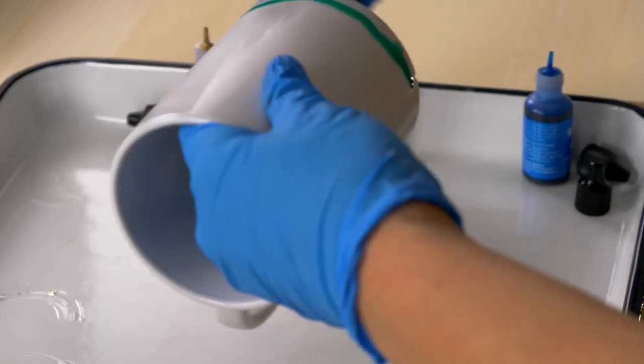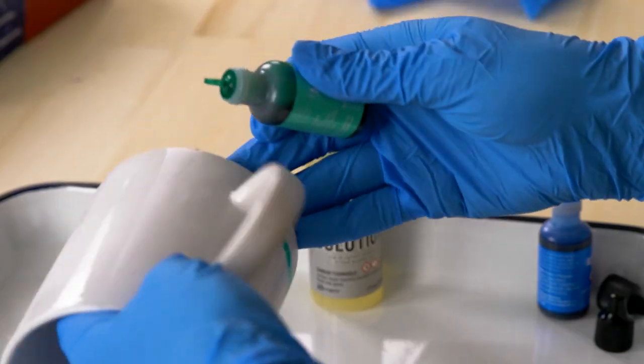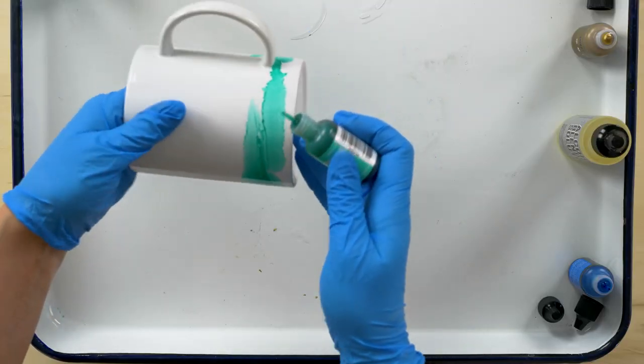Use one color at a time on your mug. Rotate as you apply the color. This is going to help the ink disperse evenly.